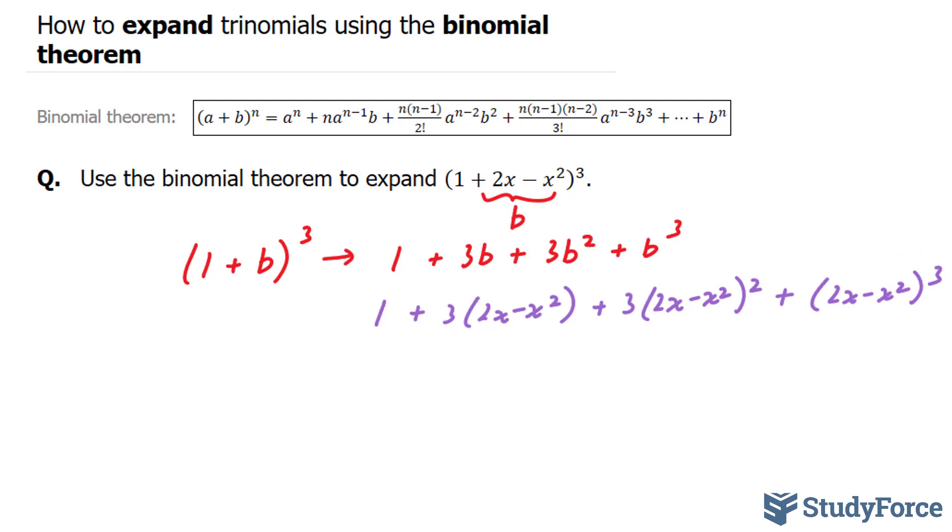Now you have to expand each of these terms, and this is where it gets complicated. This is easy to expand. We have a monomial times a binomial. This one is also easy to expand, because we have two binomials multiplied to 3. But this one, you have to use the binomial theorem again.